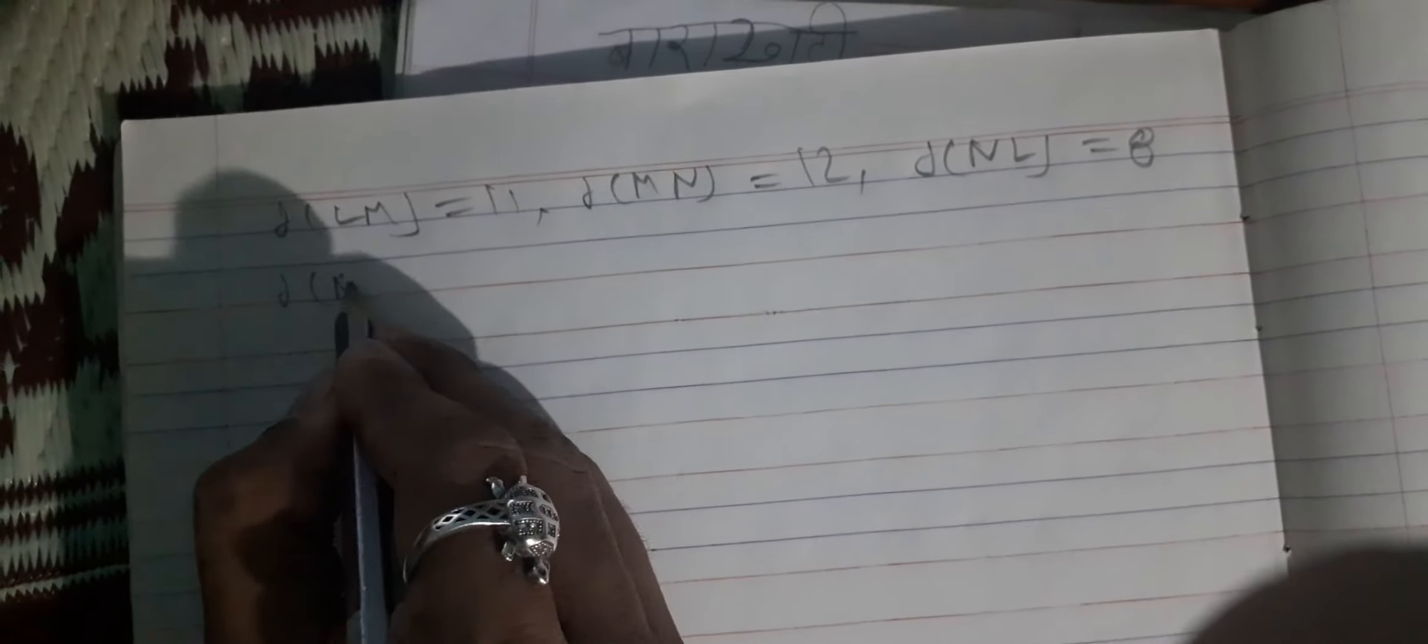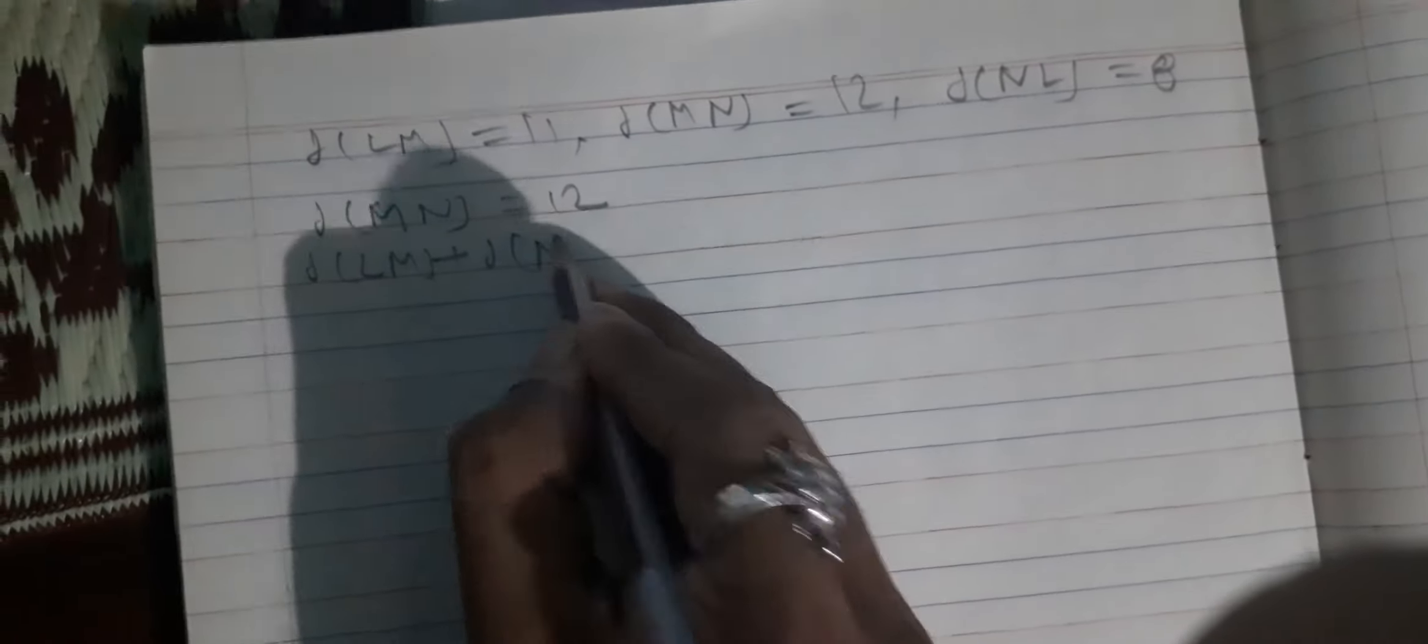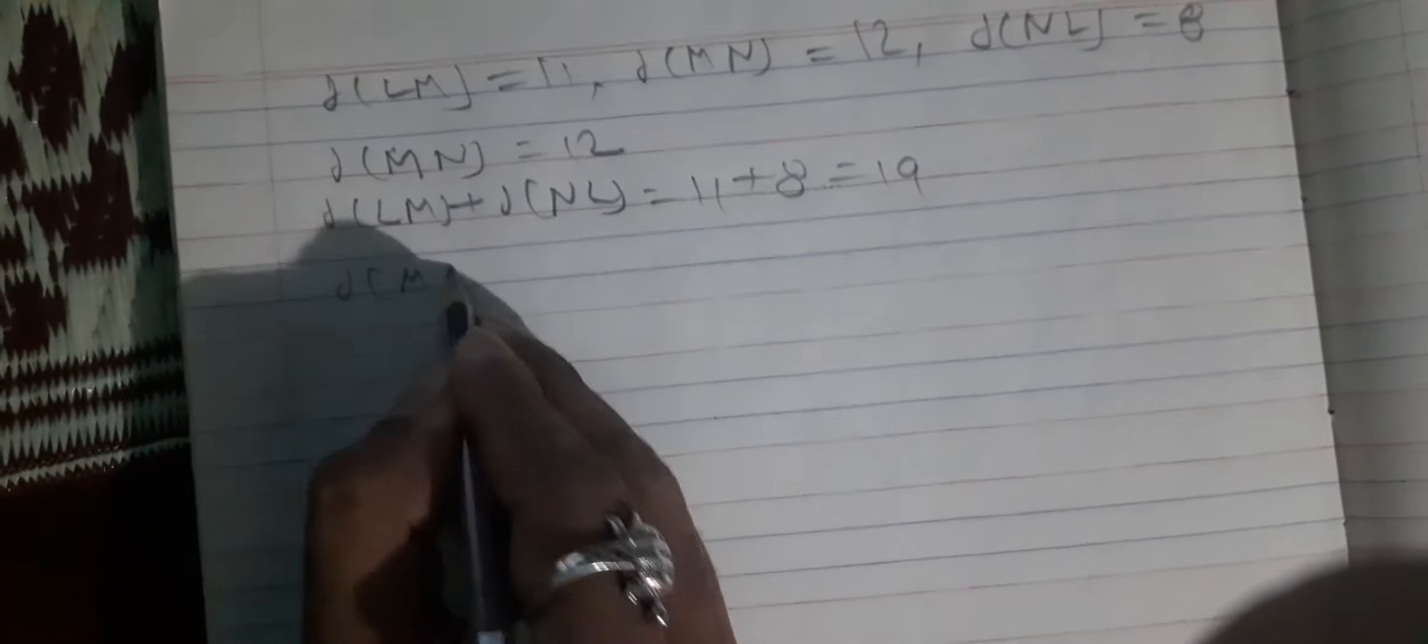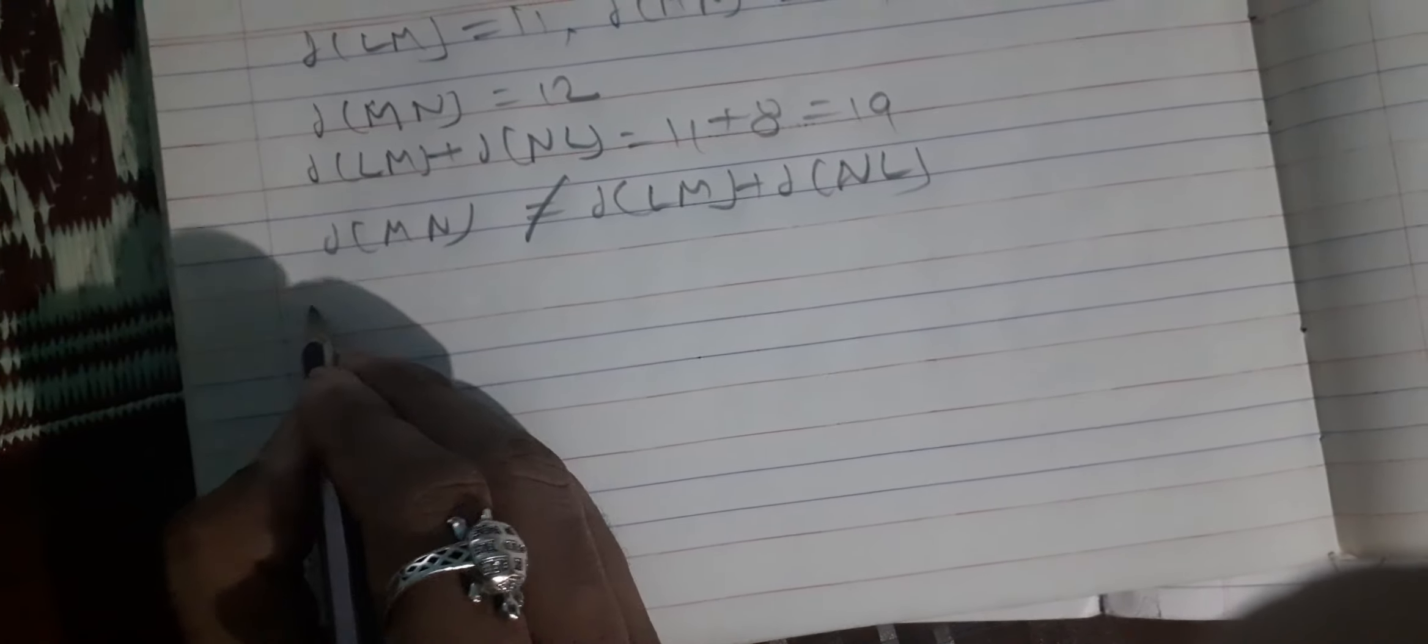Distance MN is equal to 12, but distance LM plus distance NL is equal to 11 plus 8 which equals 19. Distance MN is not equal to distance LM plus distance MN. Therefore points L, M, N are not collinear.